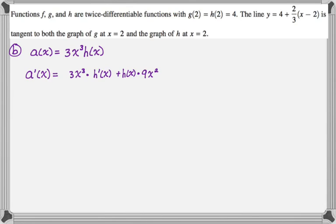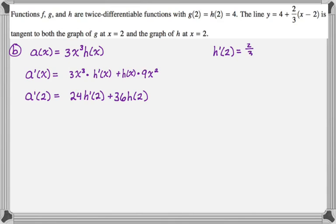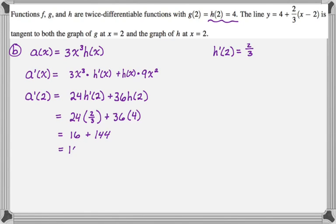Now we find a prime of two. Substituting two, we get three times eight which is 24, times h prime of two, plus nine times four which is 36, times h of two. We found h prime of two is two-thirds in the previous part, and we're told h of two is four. Substituting those values gives 16 plus 144, so a prime of two equals 160.